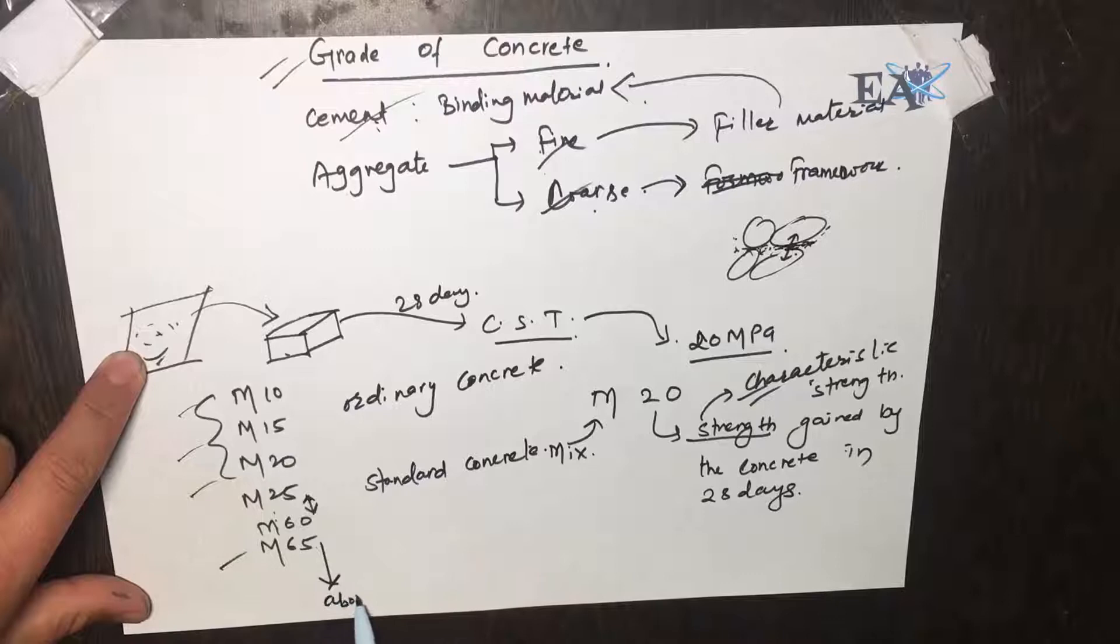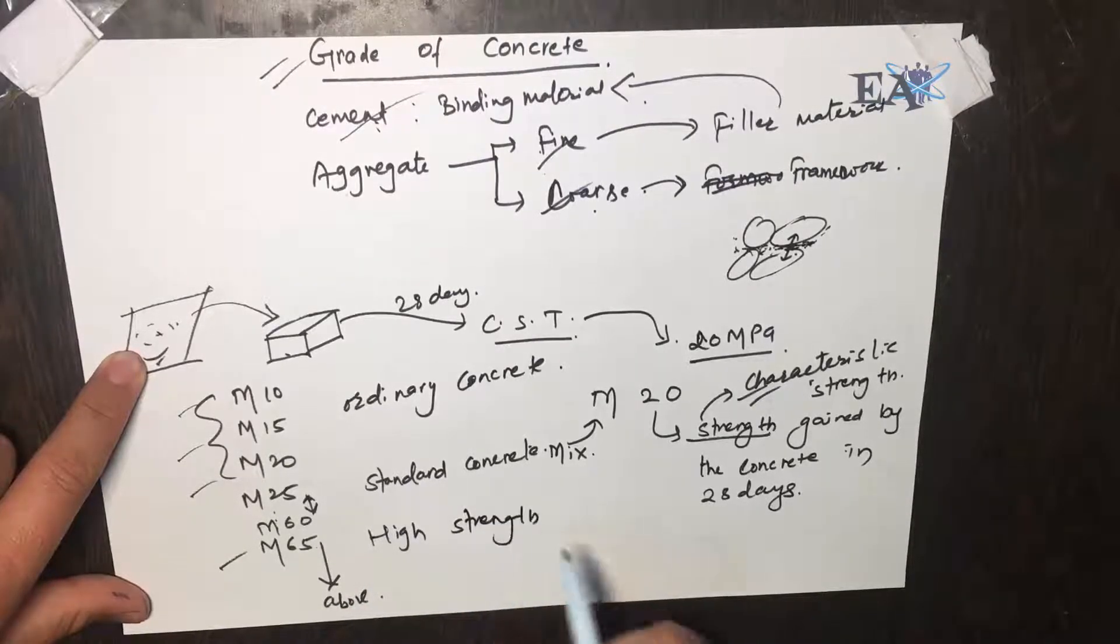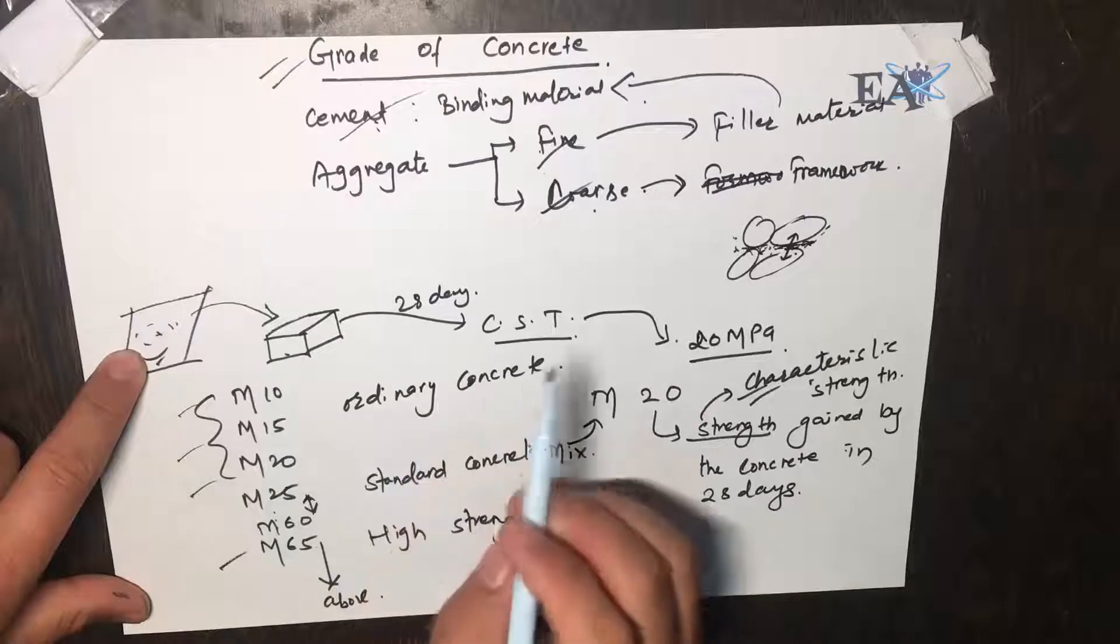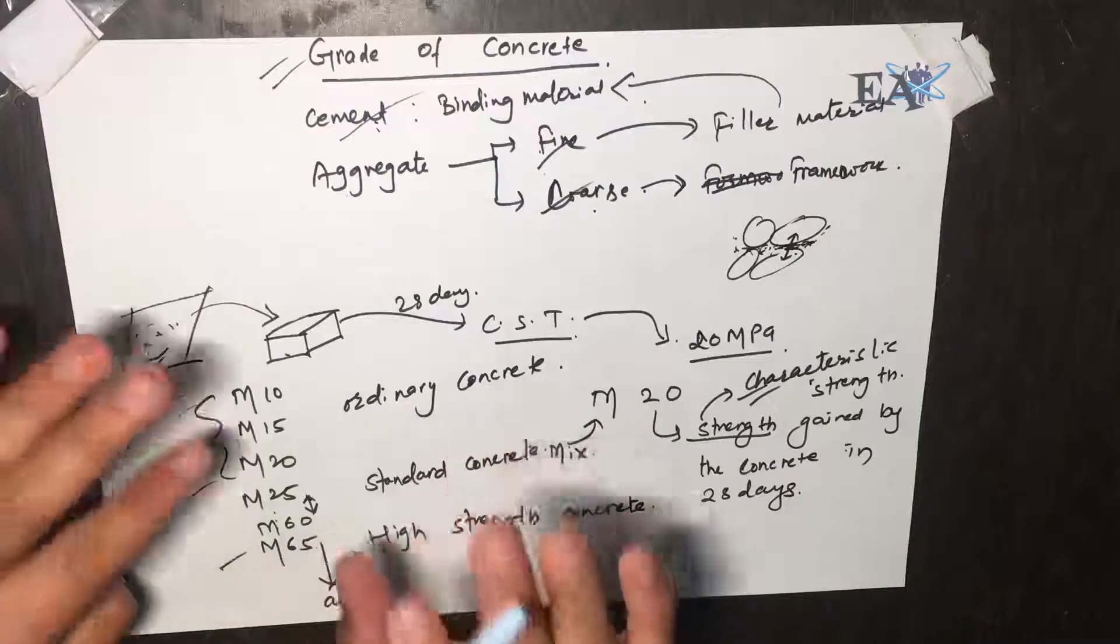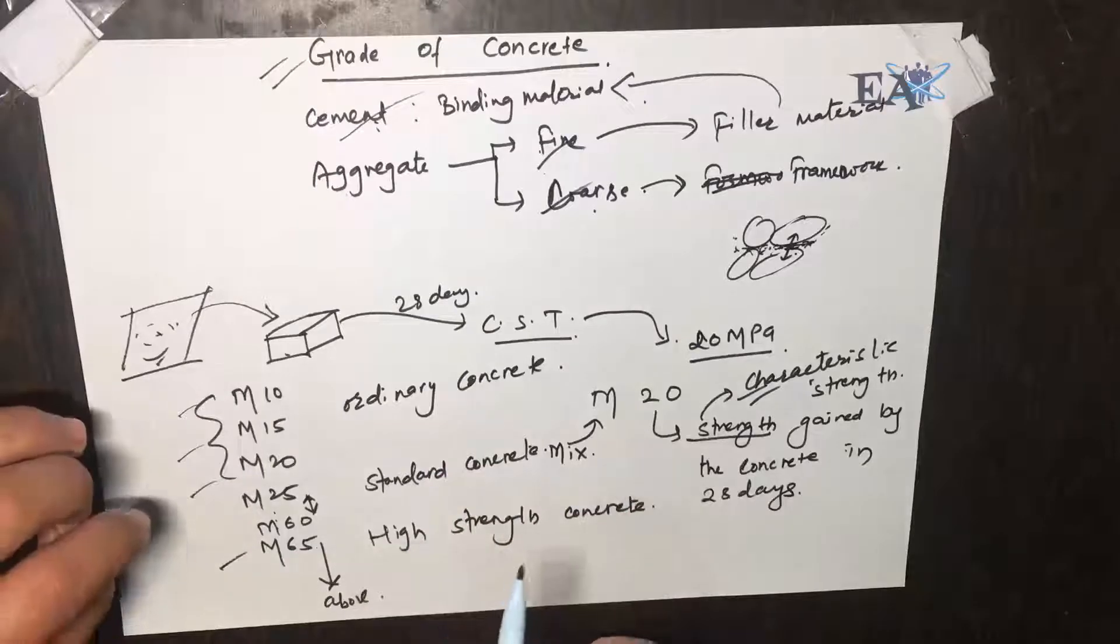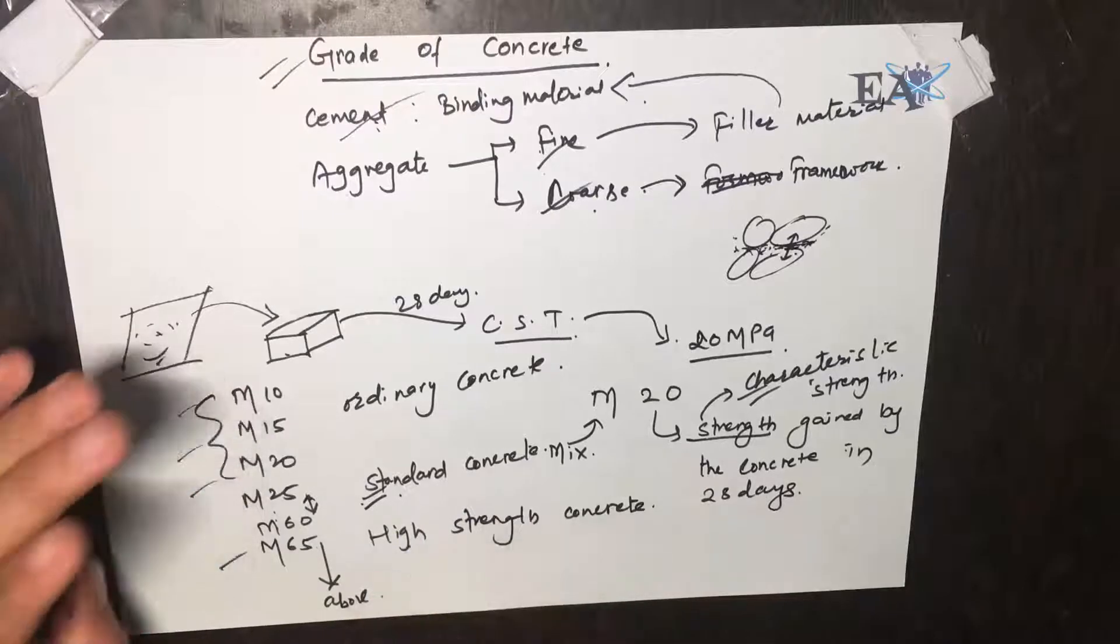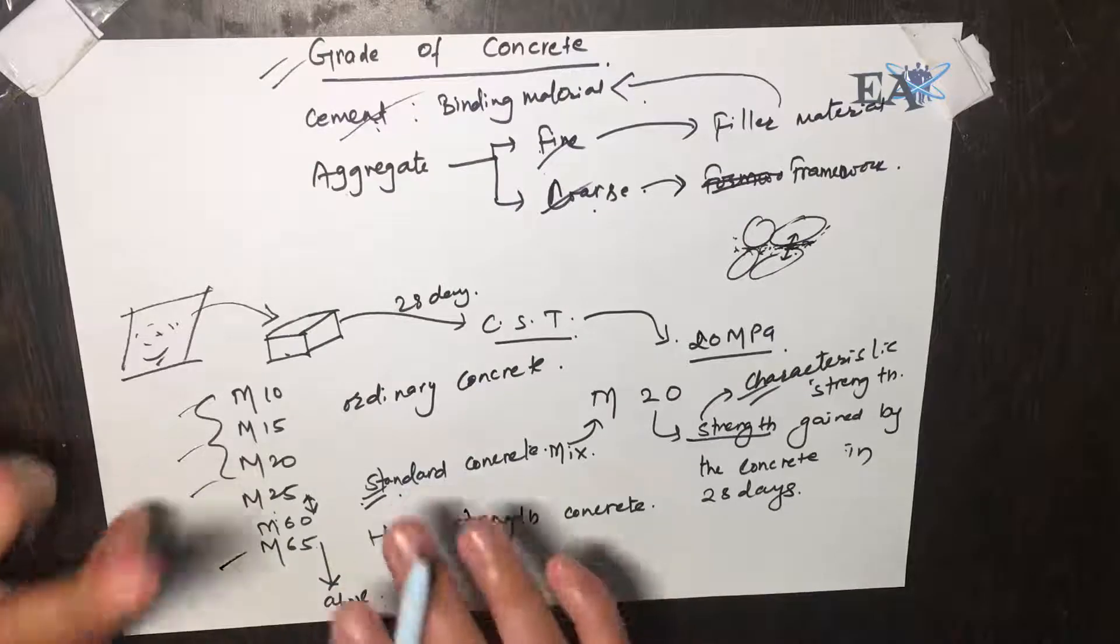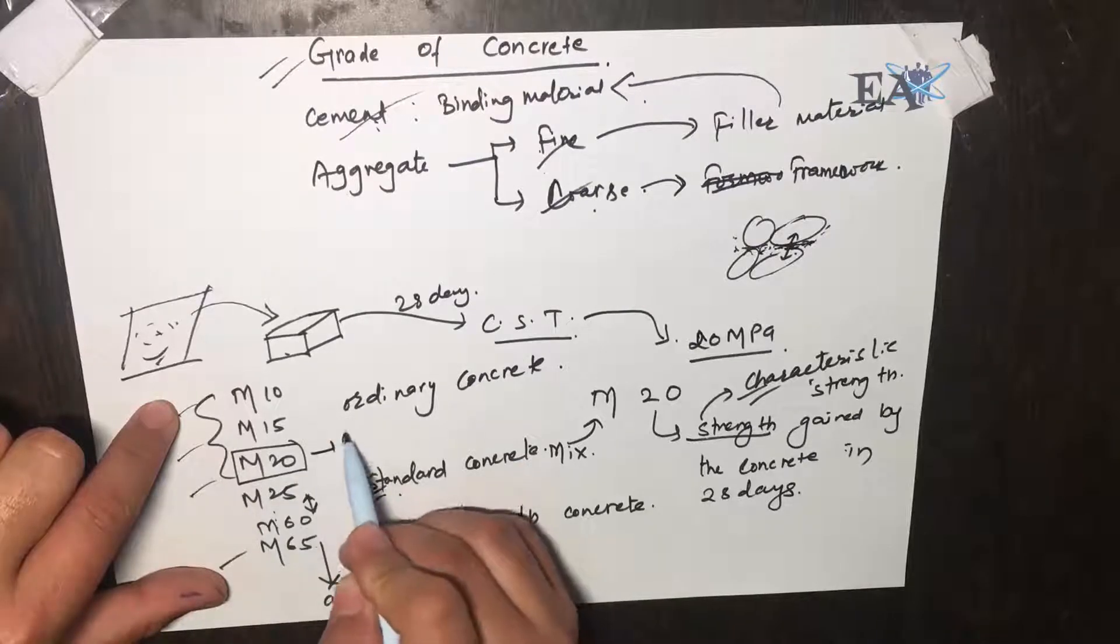Ordinary concrete is used for ordinary civil works—for example, concreting of a small house, PCC, RCC of basic structures. Standard concrete is used for pre-stressed concrete, and high strength concrete is used for very heavy and very high load-bearing structures. A recent code suggests that minimum of M20 concrete should be used for the RCC works in any case.